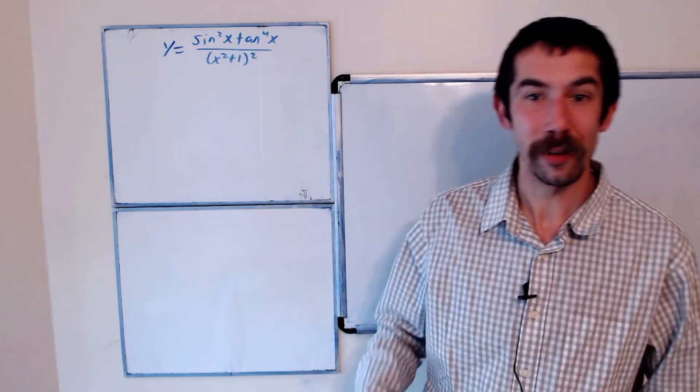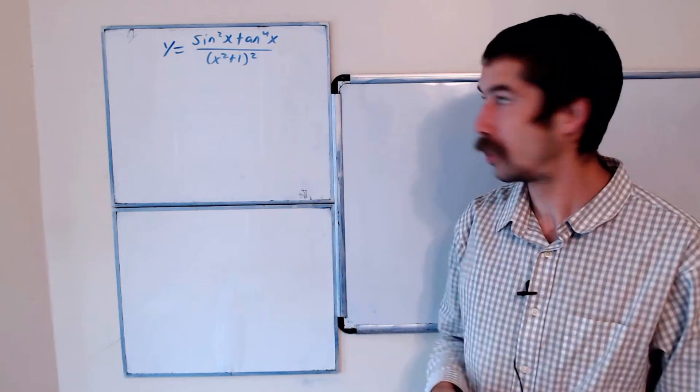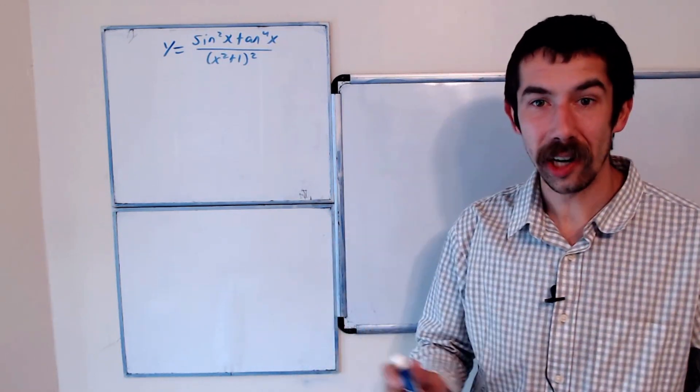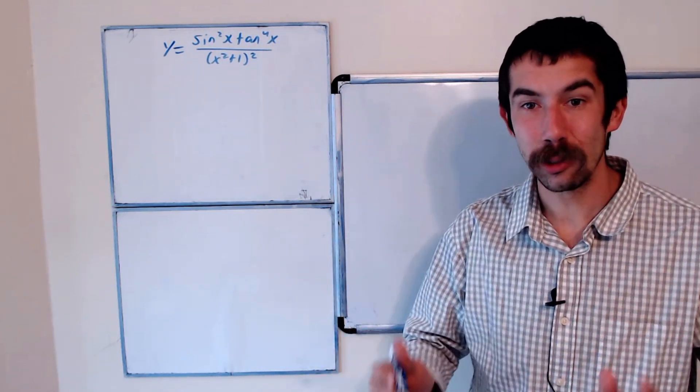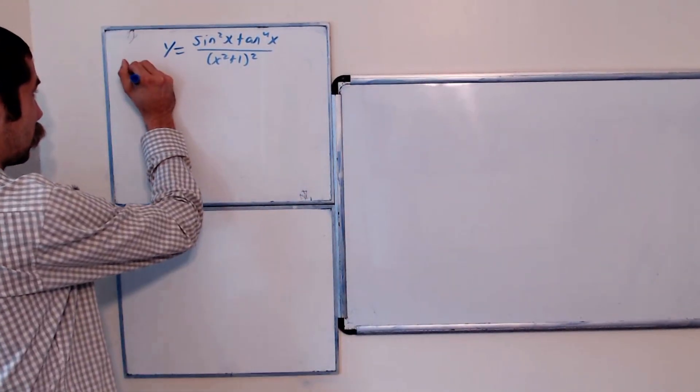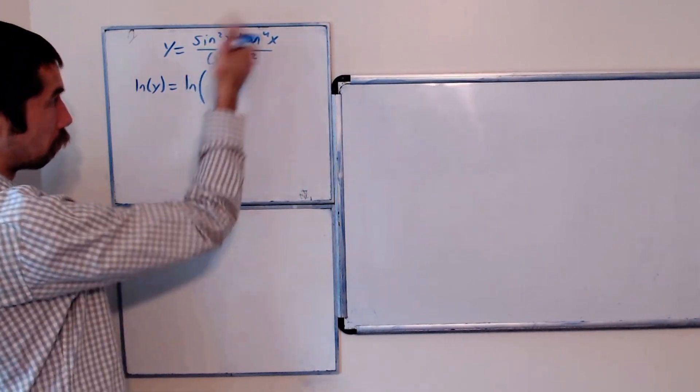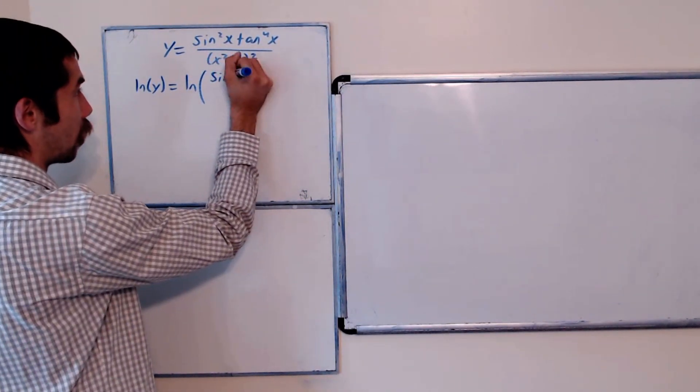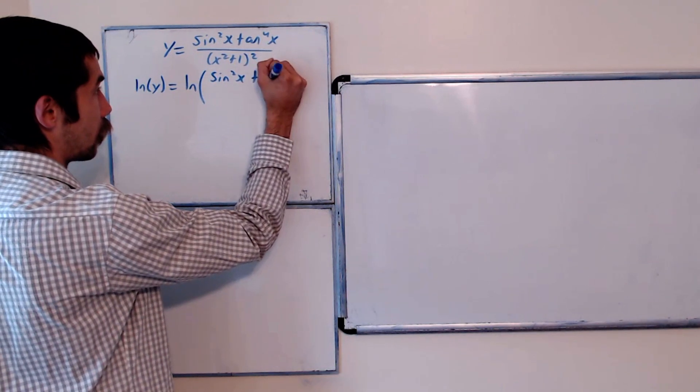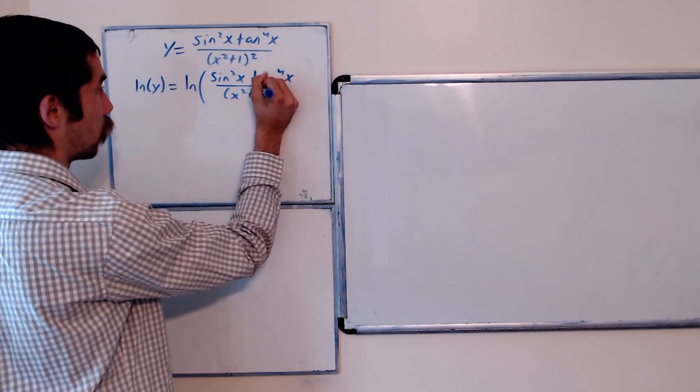Today I'm going to show you a technique for taking derivatives of crazy looking functions like this one. So the first thing you're going to do is take the natural log of both sides. Natural log of y is equal to the natural log of this function, which is sine squared x tangent to the fourth x over x squared plus 1 squared.